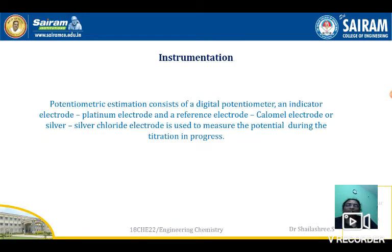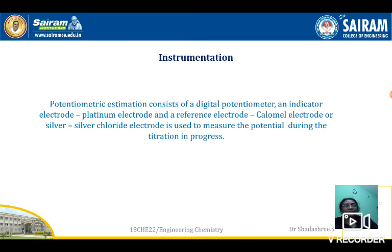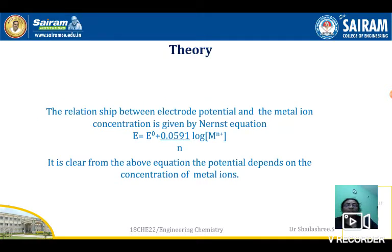Regarding potentiometric instrumentation: a digital potentiometer is used. The electrodes used are an indicator electrode — that is a platinum electrode — and a reference electrode, either a calomel electrode or a silver-silver chloride electrode. These are immersed in the solution and connected to the potentiometer to measure the potential when the titration is in progress.